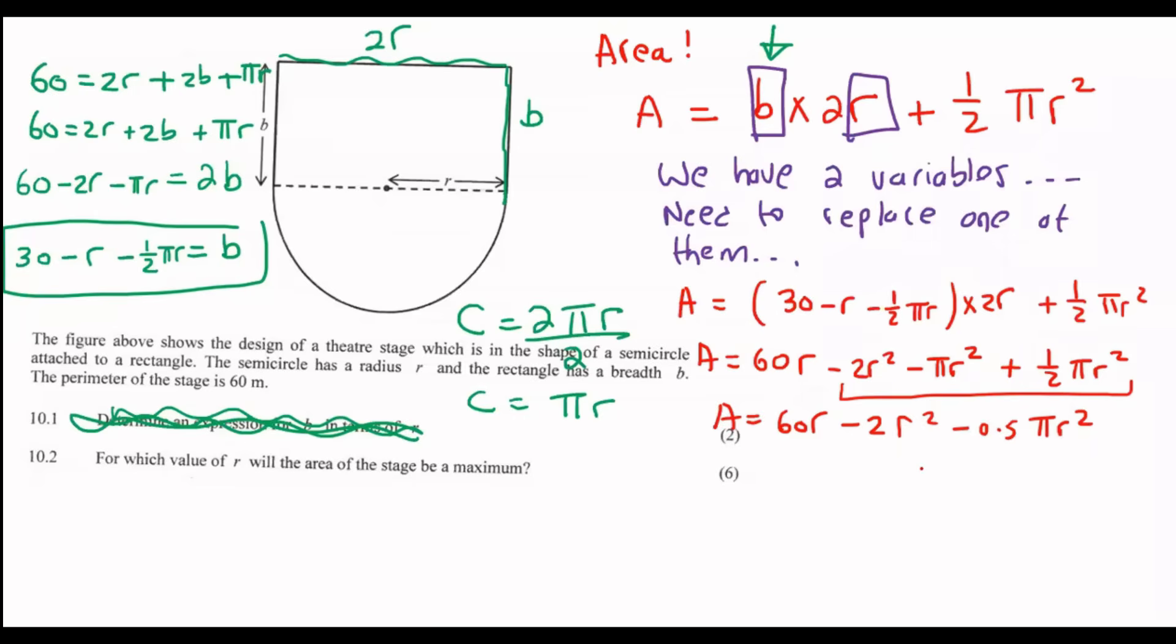So now what we can do is take the first derivative, because that's what we want to do. Remember, we said that to find the minimum or the maximum, you need to take the first derivative. Remember, on a graph, to find a maximum, you make the first derivative equal to 0. So the derivative of the area with respect to R - we only have one variable now, which is a good thing - that's going to give you 60 - 4R - πR, because the 2 multiplies by the 0.5 to become 1. So I just took the first derivative, and then I make the first derivative equal to 0.